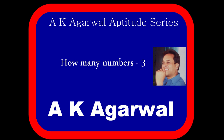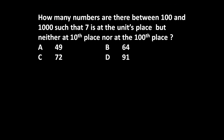Hello friends and welcome to AK Agarwal Aptitude Series. In this session we are going to learn a technique for solving a problem on how many numbers. The given problem is: how many numbers are there between 100 and 1000 such that 7 is at the unit place but neither at the tenth place nor at the hundred place? The number must be between 100 and 1000 with 7 at the unit place but neither at the tenth nor hundred place.